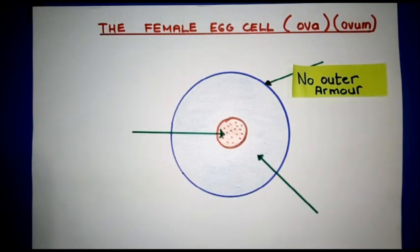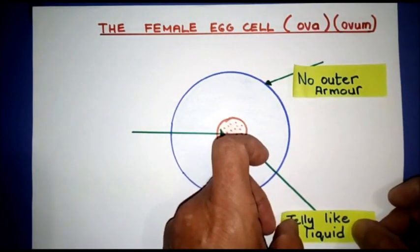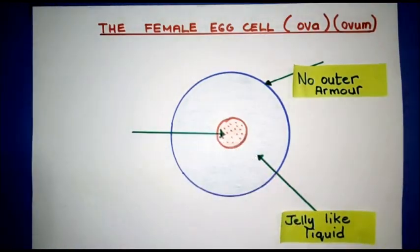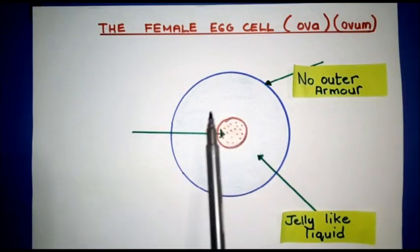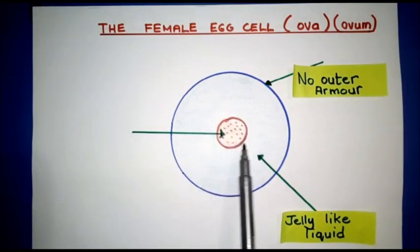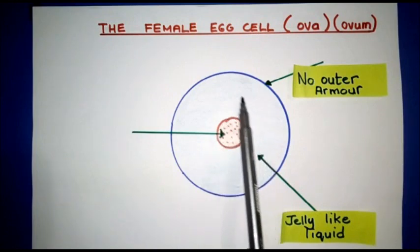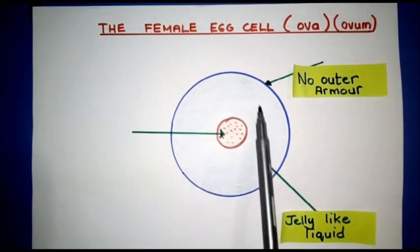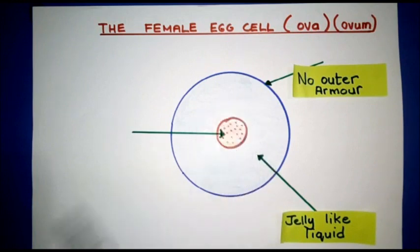So if it doesn't have outer armor, what does it have? When we get back to school, I'll explain it in more detail, but there's almost like this jelly-like liquid that protects what is in the center of the female egg. That area that I've colored in around there is the jelly-like liquid.